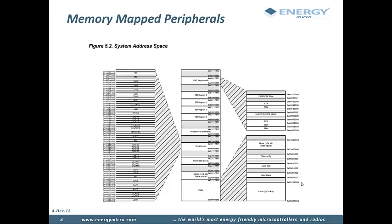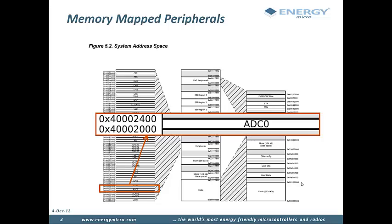All peripherals on EFM32 are memory mapped. Controlling the peripherals is done by reading and writing to certain addresses in memory. In the reference manual we can see that peripherals have their own section in the system address space. Inside the peripheral block, each peripheral is given its own memory region. For example, here is the memory region reserved for the ADC. The bottom address is called the base address for that peripheral.